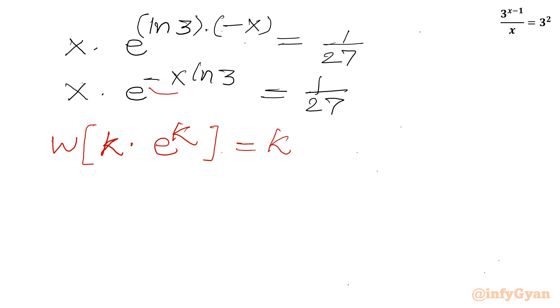So our k is here: minus x ln 3. So what is missing? It is minus ln 3. So let us multiply both sides by minus ln 3. This side and this side also.